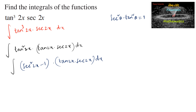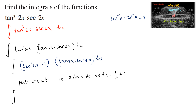Let us substitute 2x = t, which implies 2 dx = dt, that is dx = (1/2) dt. So the integral becomes (sec²t - 1)·tan t·sec t · (1/2) dt.